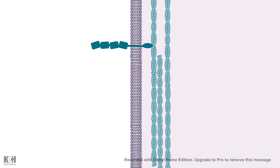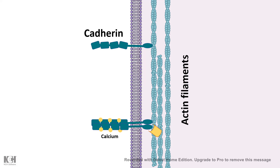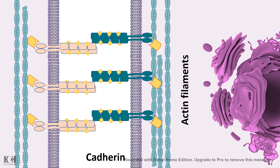Cadherin has five extracellular domains which are in a flexible, jumbled conformation when calcium levels are low. When calcium levels are high, there is a conformational shift — the domains become more rigid and less flexible. The cadherins also dimerize to form a rigid structure, which can then engage in homophilic interactions. Although each individual homophilic interaction is weak, together they make a very strong junction.